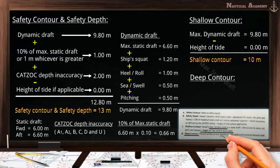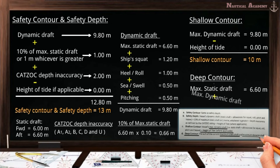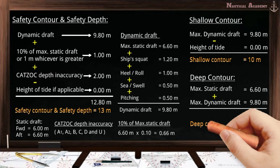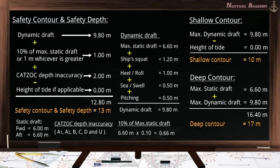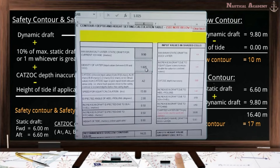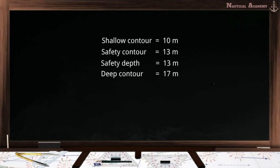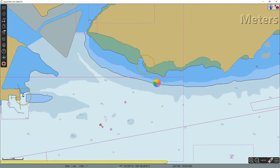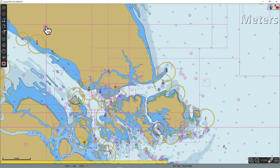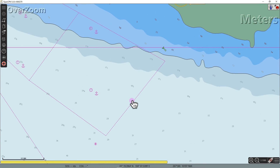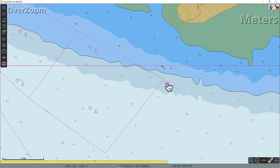For the deep contour, it is the maximum static draft of 6.60 meters plus the maximum dynamic draft of 9.80 meters, giving a sum of 16.40 meters, so our deep contour is 17 meters. When we are on board, we do not calculate this manually — we have an Excel sheet in which we enter the following data, and the recommended safety parameters are automatically provided, and these values are then set in the ECDIS. Since I was not on the bridge when I made this video, I used the installed ECDIS on my laptop called OpenCPN, which is open-source software available for free download on their official website. It has limited features but can still set safety parameters and display available contours in ENCs.